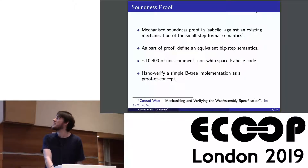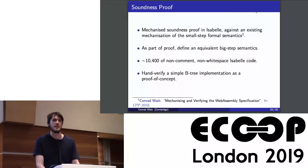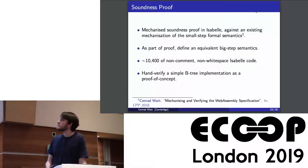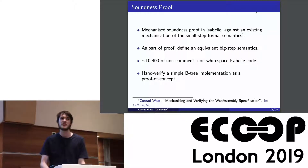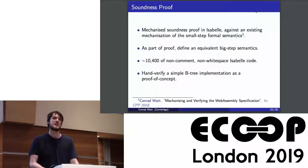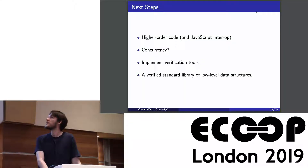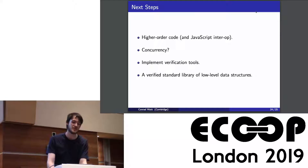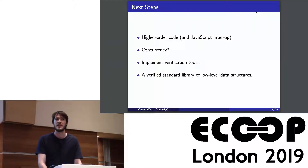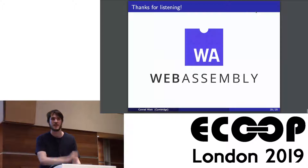Our soundness proof is mechanized in Isabelle against an existing mechanized semantics of the official small-step semantics. Our proof rules are verified against the mechanized semantics, and we hand-verify a simple B-tree example to make sure we got our proof rules right and the logic is as expressive as we want it to be. Next steps: do higher order, do concurrency, implement some verification tools, and maybe as a stretch goal, have some kind of standard library of verified data structures.